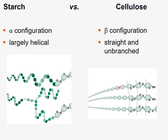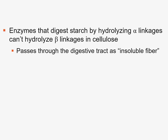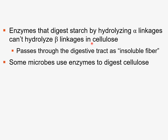We can see hydrogen bonding between the long, unbranched, straight polysaccharides of cellulose. There are enzymes that specifically digest starch by hydrolyzing alpha linkages, but those enzymes can't hydrolyze the beta linkages in cellulose. Humans do not have the enzymes to hydrolyze beta linkages, so when we eat plants, cellulose passes through the digestive tract as insoluble fiber. Some microbes can digest cellulose — for example, termites can break down wood, and microbes in the guts of cows allow them to break down plant material.